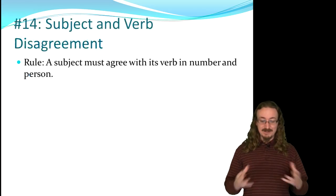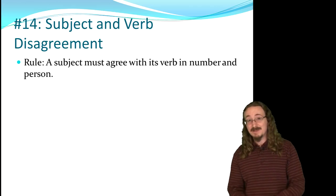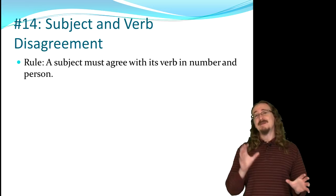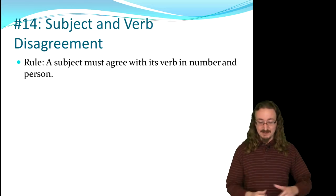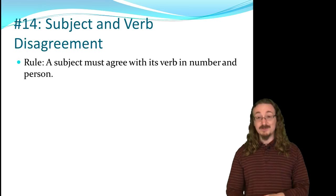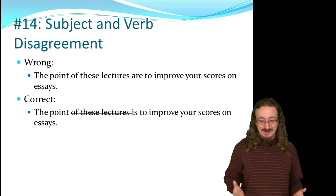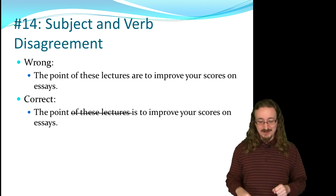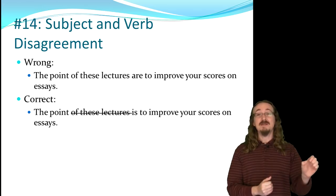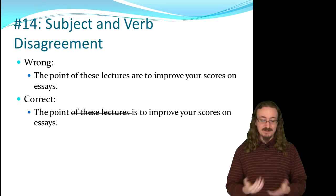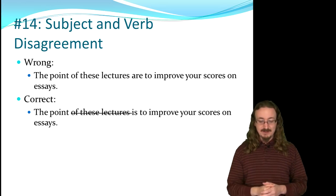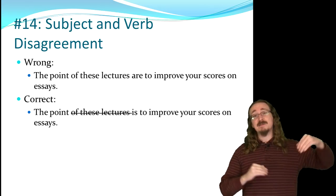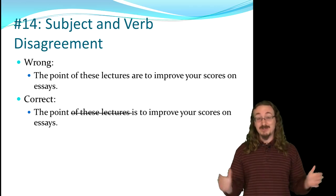Number 14: subject and verb disagreement. Just like pronouns must match their antecedents, subjects and verbs must agree. 'The point of these lectures are to improve your scores' is wrong — the subject is 'the point,' not 'lectures,' so it should be 'the point is.' You have to bracket out the prepositional phrase 'of these lectures' that comes between the subject and verb, then you'll know which form to use.